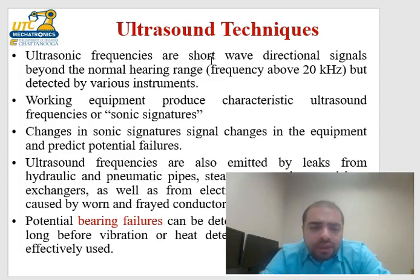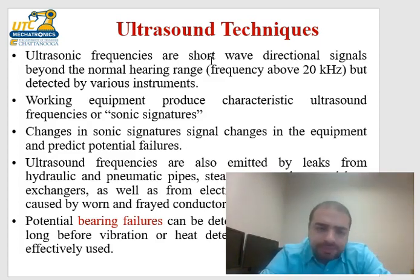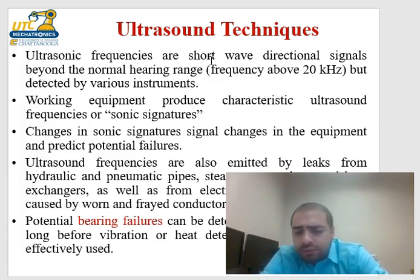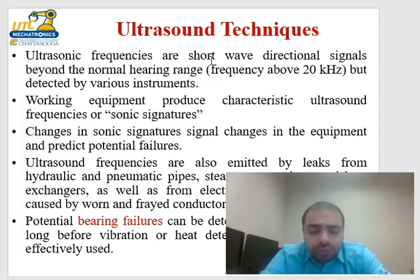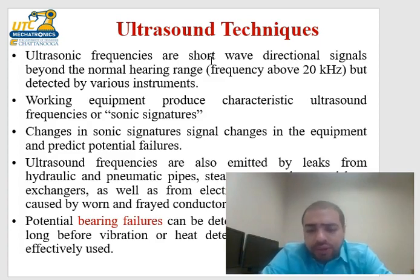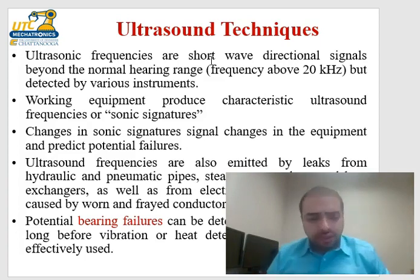Ultrasound is commonly used to locate leakages in pipes and identify the cause of noise. Ultrasonic frequencies are emitted by leaks from hydraulic and pneumatic pipes, steam traps, valves, and heat exchangers, as well as from electrical arcing, coronas caused by worn conductors, and potential bearing failures. Importantly, ultrasonic noise appears long before vibration, so bearing failures can be detected by ultrasonic means well before vibration or heat detection methods become effective.